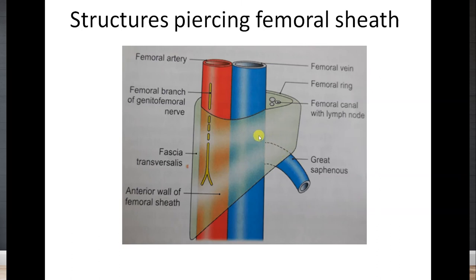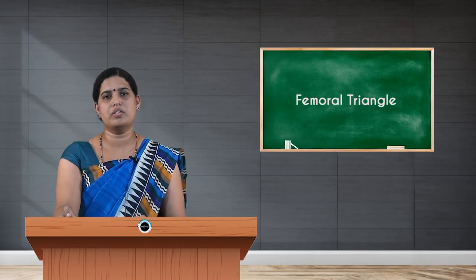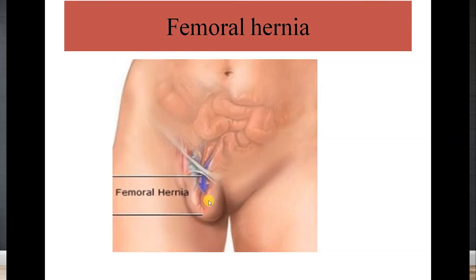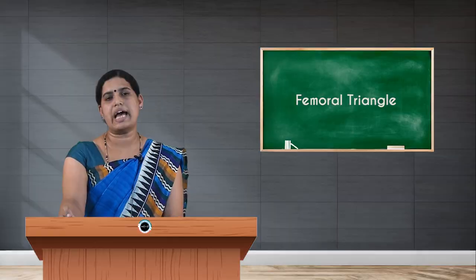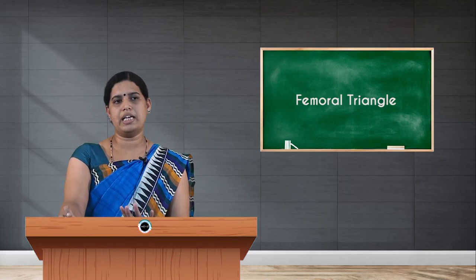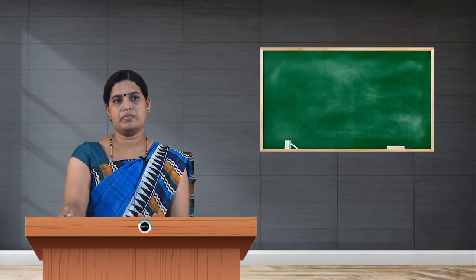Structures piercing the femoral sheath include the great saphenous vein, which pierces the sheath and drains into the femoral vein, and the femoral branch of the genitofemoral nerve, which pierces the anterior wall of the femoral sheath. Femoral hernia is more common in females compared to males because of the lesser dimension of the femoral vessels in females and because females have a wider pelvis, making them more susceptible to femoral hernia at the weakened femoral canal.